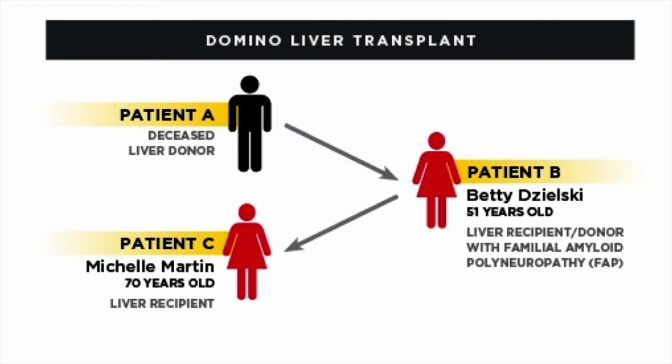These amyloid deposits build up slowly over time and start to damage those organs. Symptoms may not start early in life because it usually takes years of damage to be recognized — for some patients the first symptoms may present in their 20s, for others not until their 80s. But after the onset of symptoms, the damage has usually been severe enough that, if the disease continues, the patient might have only about 15 to 20 years of life left.